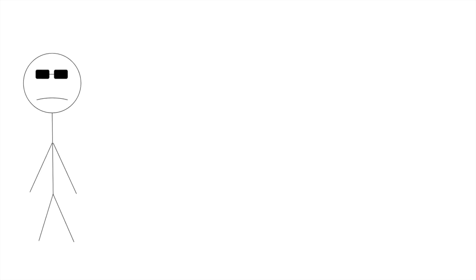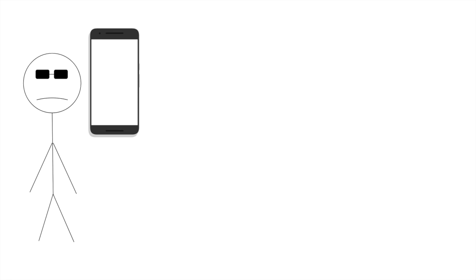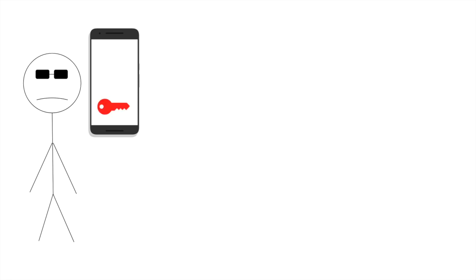But now let's imagine that there's a bad guy — a hacker man — who wants to steal your information. If the hacker man has his own device and was somehow able to figure out your smartphone's key, he could essentially impersonate your smartphone, talk to the server, and steal your data. This is where PUFs become useful.